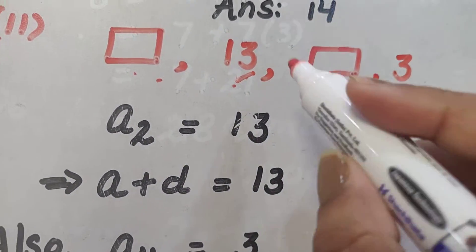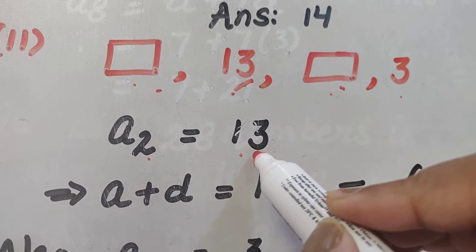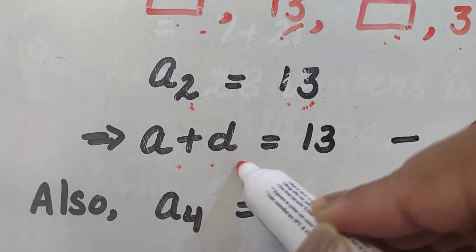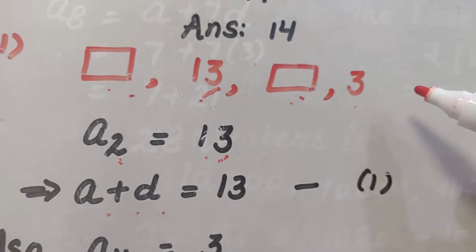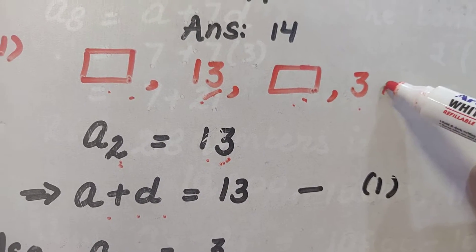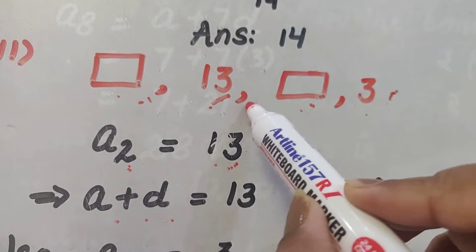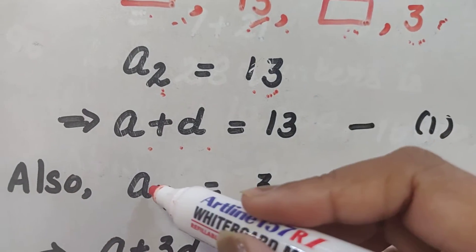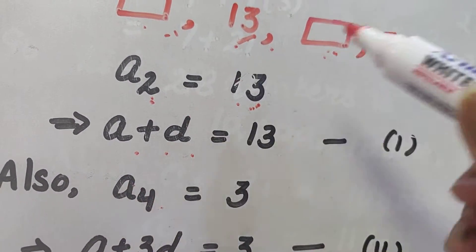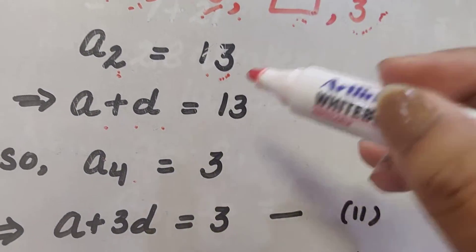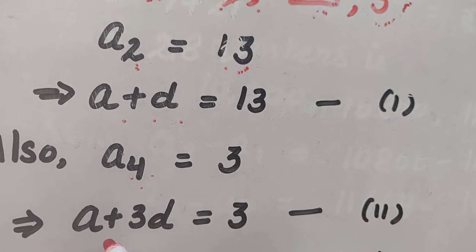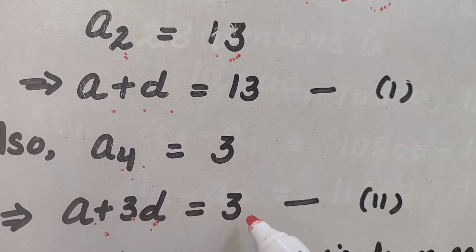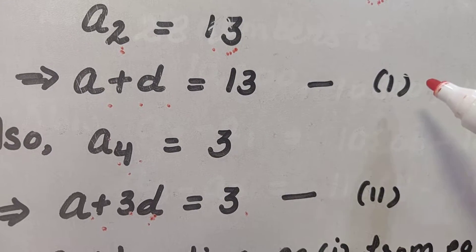We focus on what is given. The second term is given: a₂ = 13, which means a + d = 13. The fourth term is also given: a₄ = 3, which means a + 3d = 3. In this way we get two equations with two variables, 'a' and 'd'.